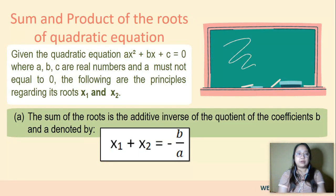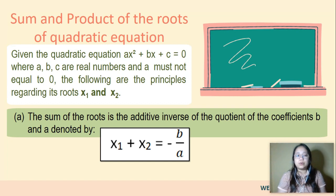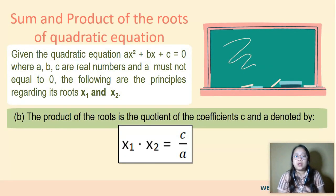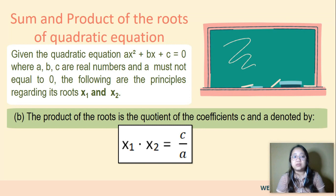Now let us discuss the sum and product of the roots of a quadratic equation. Given the quadratic equation ax squared plus bx plus c equals zero, where a, b, and c are real numbers and a must not be equal to zero, the following principles apply. Letter A: the sum of the roots is the additive inverse of the quotient of the coefficients b and a, denoted as x₁ plus x₂ equals negative b over a. Letter B: the product of the roots is the quotient of the coefficient c and a, denoted as x₁ times x₂ equals c over a. So for the sum, use negative b over a, and for the product, use c over a.